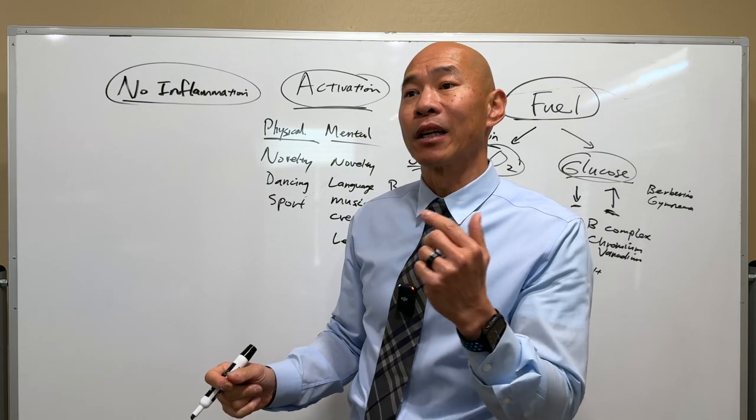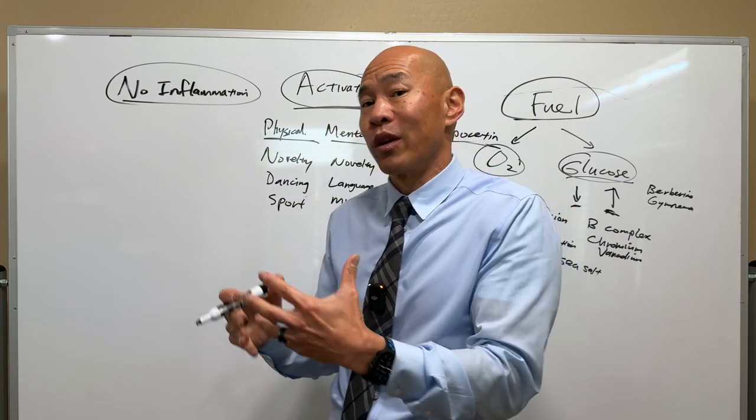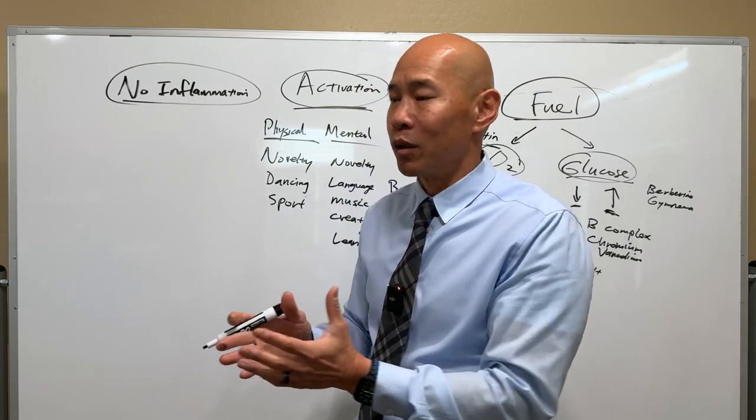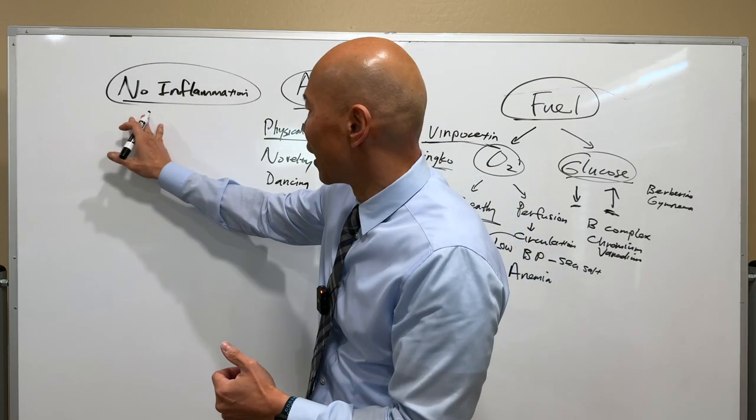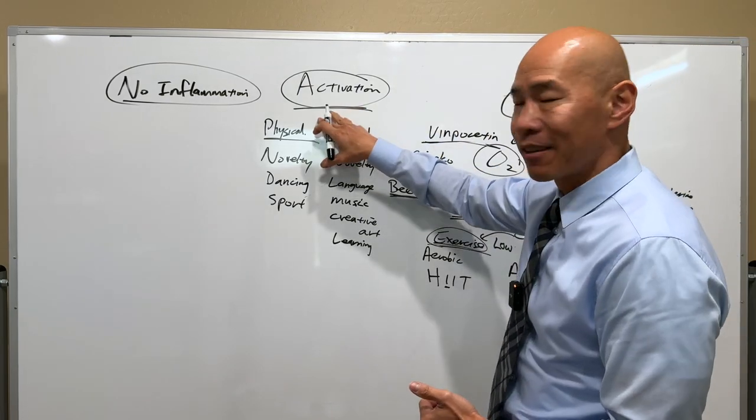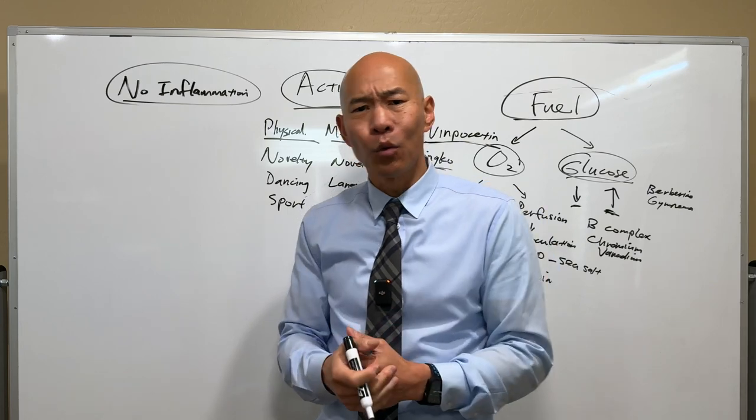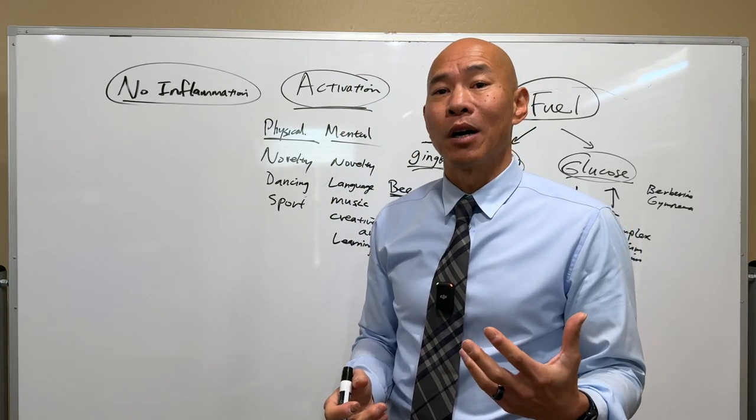Secondly, inflammation can literally destroy brain cells. And if you destroy enough brain cells, then you get neurodegeneration, which leads into Alzheimer's and various forms of dementia. So brain requires fuel in the form of oxygen, glucose. It requires activation, and it has to have no inflammation.